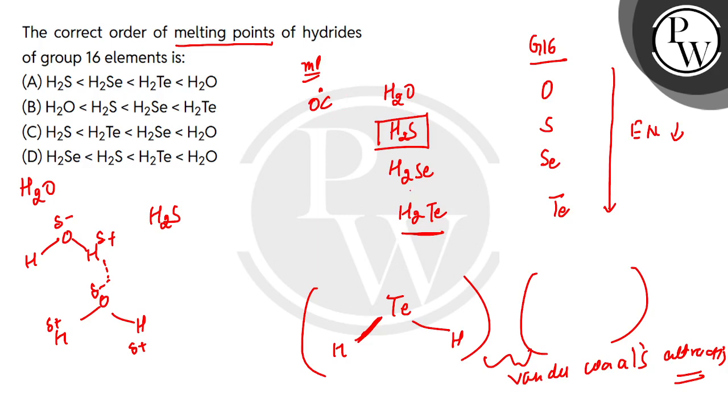So for H2S, H2Se and H2Te, you will see that there is no hydrogen bonding because we don't consider these elements for hydrogen bonding. The mass and size of sulfur are lowest, so the forces of attraction in H2S are lowest and the melting point decreases.